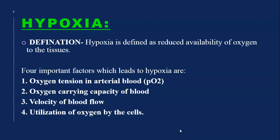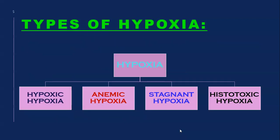The first factor is oxygen tension in the arterial blood, that is partial pressure of oxygen (PO2). Second is the oxygen carrying capacity of the blood. Third is how your blood is flowing, that is the velocity of blood flow. And fourth is whether your cells are able to utilize the oxygen that the blood is transporting.